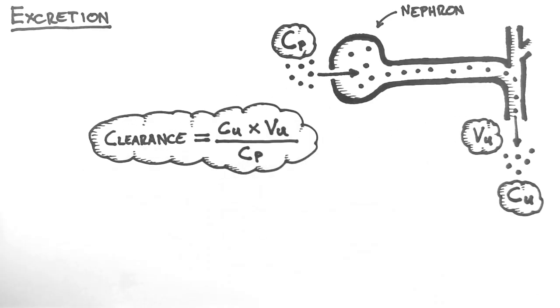The clearance is often very difficult to understand conceptually, so I'll try to simplify it as best I can. This equation asks, how much plasma contains the amount of drug being cleared at this time?